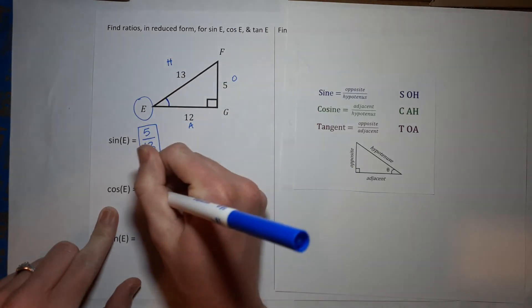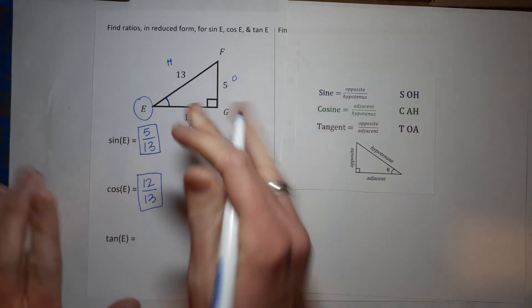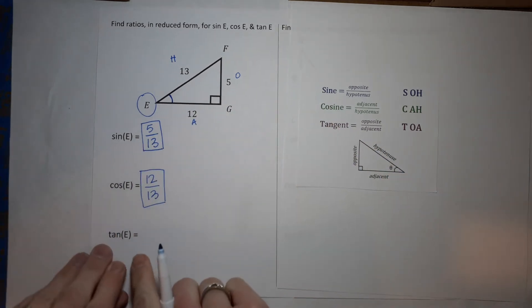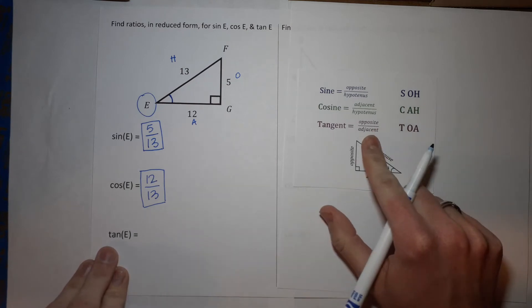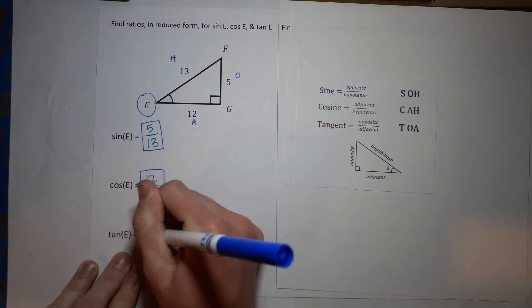Cosine of E is adjacent over hypotenuse. Adjacent is 12, hypotenuse is 13. That can't be simplified so I'm done. See, I told you it's not too bad, right? Alright, tangent is opposite over adjacent, so 5 over 12. Again, that can't be simplified, so we're done.